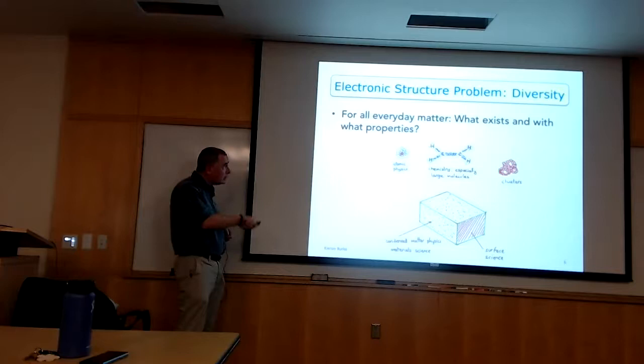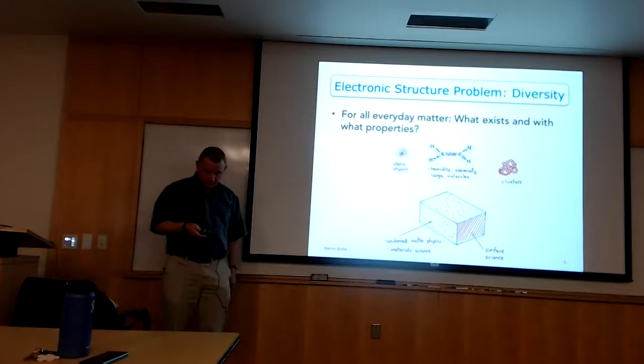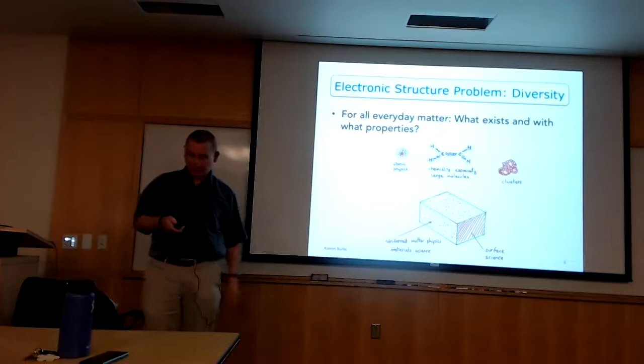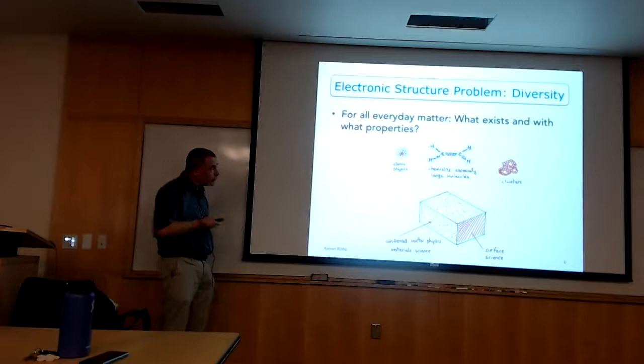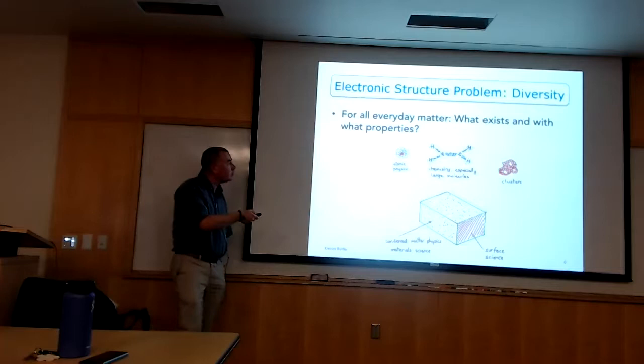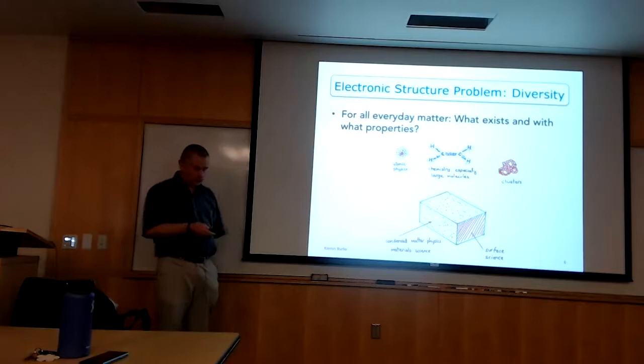Electronic structure theory: all the everyday materials we see are really just nuclei held together by a bunch of electrons. You have this problem you want to solve over and over again — the ground state energy, the lowest energy state of these electrons. They sit in their lowest energy state at room temperature and are the glue that holds atoms together in molecules or materials. If you can find their lowest energy, you can predict geometry, bond energies, reaction rates, and all sorts of properties.